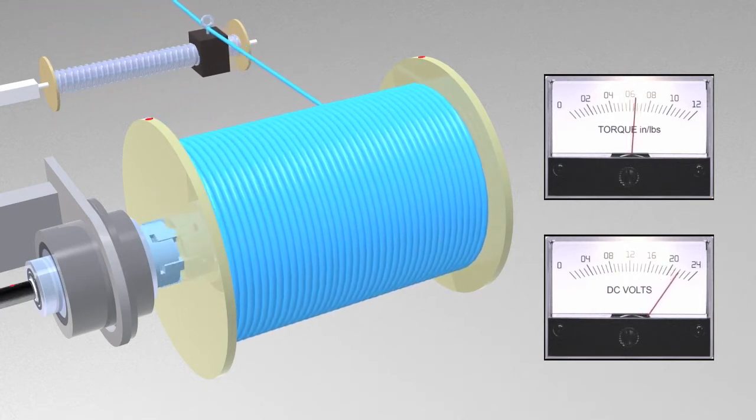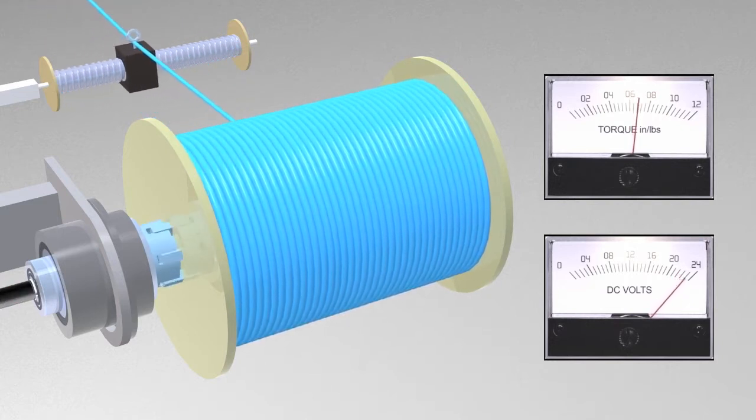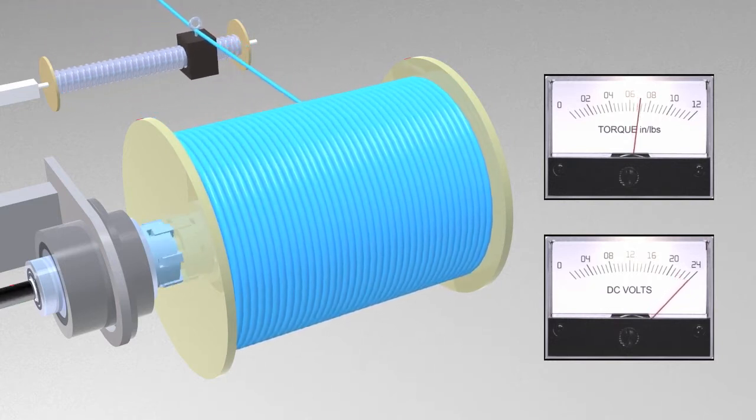However, a magnetic particle clutch can have extended or even continuous slip without damaging the clutch.